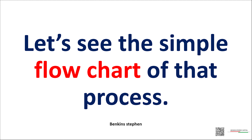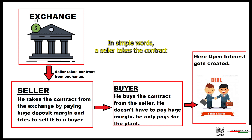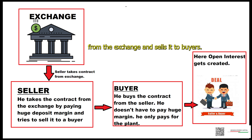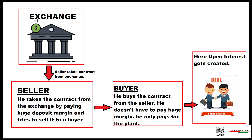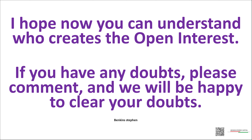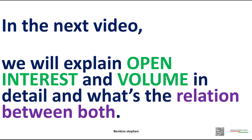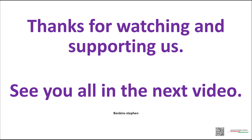Let's see the simple flowchart of that process. In simple words, a seller takes the contract from the exchange and sells it to buyers. I hope now you can understand who creates the open interest. If you have any doubts, please comment and we will be happy to clear your doubts. In the next video, we will explain open interest and volume in detail and what's the relation between both. Thanks for watching and supporting us — see you in the next video.